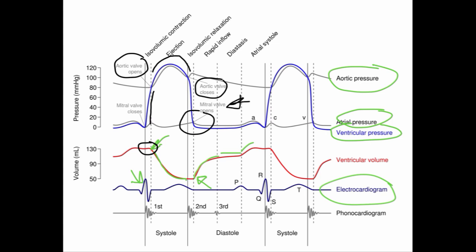Now you have filling of the left ventricle because the mitral valve opens. The left atrial pressure is higher than the ventricular pressure at first, then the pressures equalize, and then you have the atrial kick — again, the left atrial pressure is higher than the ventricular pressure. The flow of blood is from the left atrial side towards the left ventricular side, and then the cycle repeats.